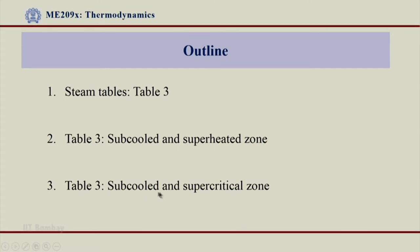We can also see that the sub-cooled to supercritical zone can be covered by Table 3. So, the sub-cooled zone, superheated zone, and supercritical zone — the properties for any state lying in any of these regions can be obtained from Table 3.